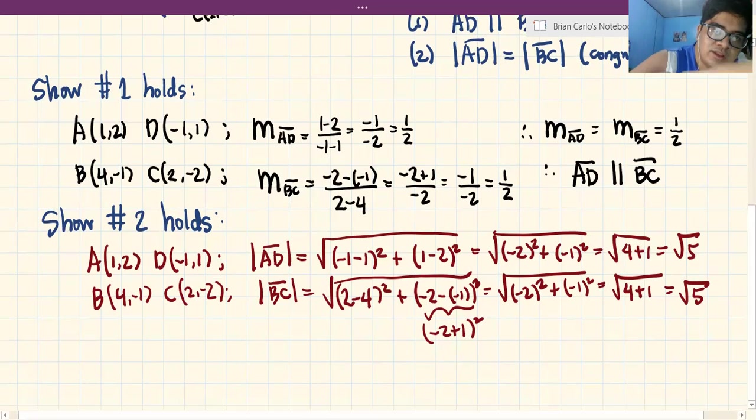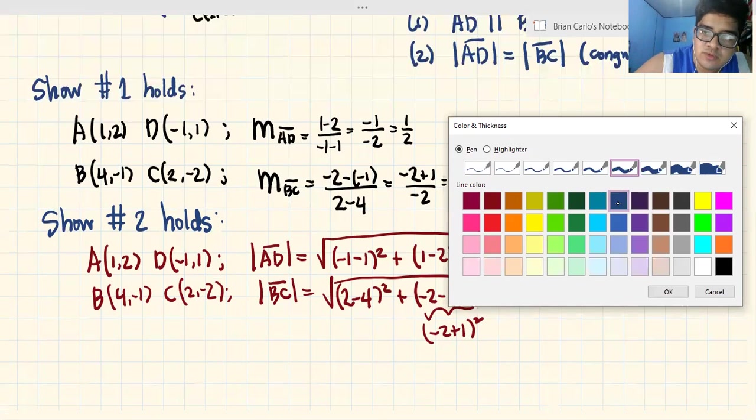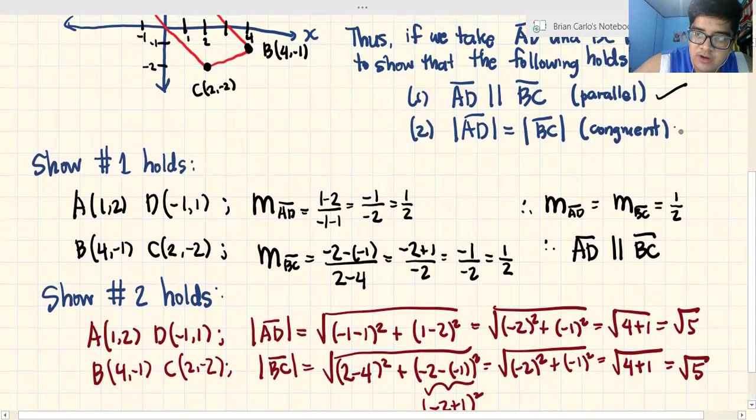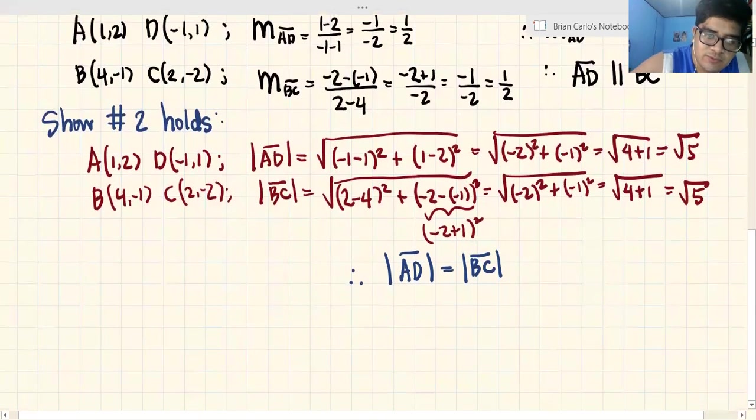Therefore, yung segment AD, yung distance yan, is equal to the segment BC. And we have conquered the part of the congruence.